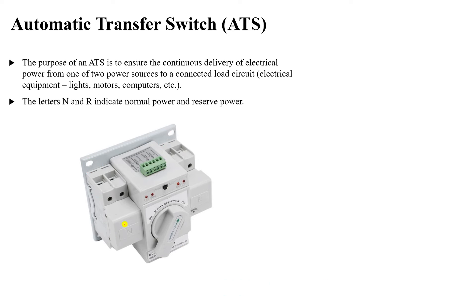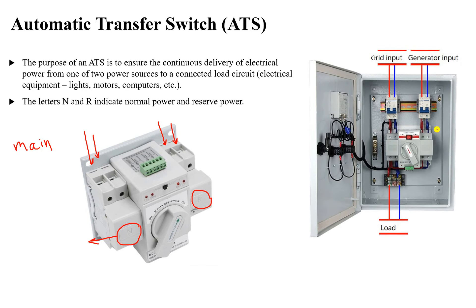As you can see in this figure, the ATS has two letters: N and R. N represents the normal power — our normal power or utility grid, for example, or an electrical generator — the main or primary source of electrical power is connected here. The reserve power or backup power is connected at R. For example, the primary source is the grid and the backup source is the generator.